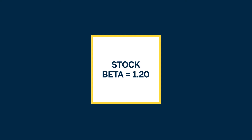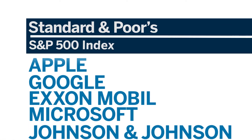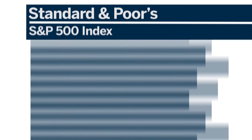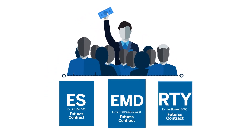If a stock has a beta of 1.20, it is 20% more volatile than the S&P 500. If the S&P 500 was up 10%, a stock with a beta of 1.20 would be expected to rise by 12%. An S&P 500 index fund, which owns each of the 500 members of the index, has a beta of exactly 1.00. If an investor was buying beta, it would refer to investing in the market, usually through derivatives such as S&P 500 futures.